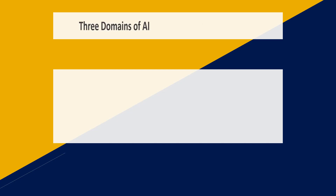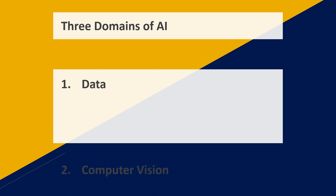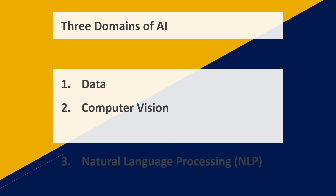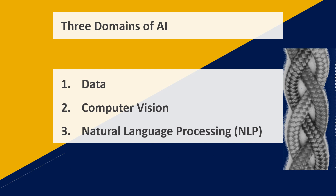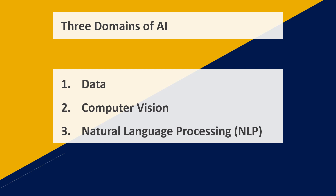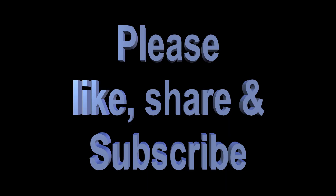With that, we come to the end of this session where we have learned the three main domains of AI: Data, Computer Vision, and Natural Language Processing. We can imagine these three domains to be the three strands in a braid — they all together constitute the concept called Artificial Intelligence. I hope you understood the concept clearly. Please do like and subscribe to my YouTube channel. Thank you.